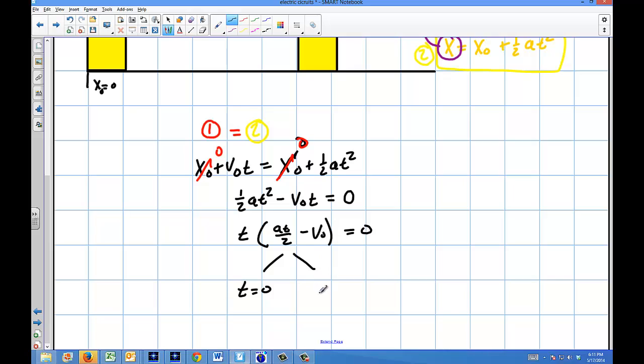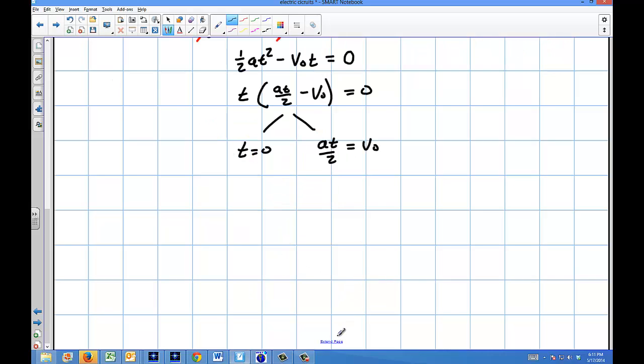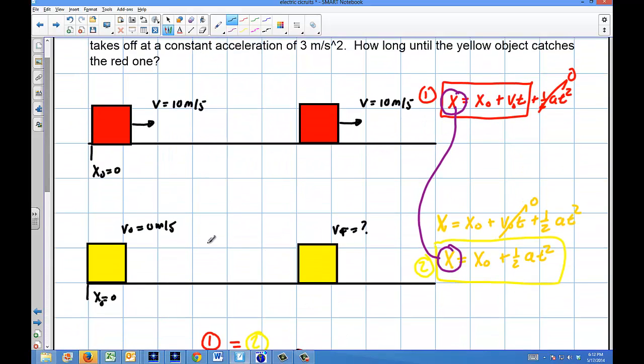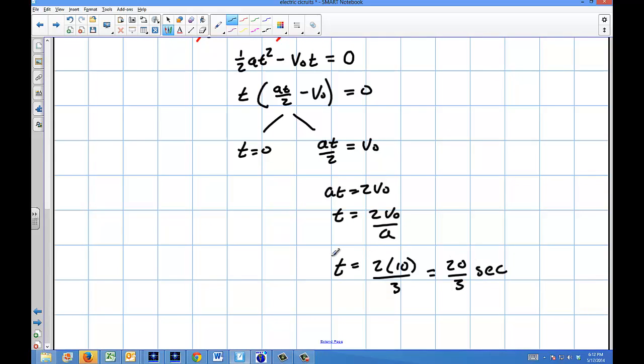But this is the one that we really care about here. So if I went ahead and solved for that, I would say AT over two equals V0 of the red one. And I would say AT equals two V0. And then T is going to be two V0 over A. So my time here is just going to be two times the V initial of this one, which is 10, and then the acceleration of this one is just going to be three. So I'm going to have 20 over three seconds. That's when they will actually have the same position again. That's when the yellow one will catch it again in the future. That's when it actually will intersect it right at about seven seconds, a little bit less than seven seconds.